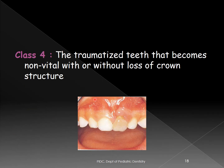Class IV is a traumatized tooth that becomes non-vital with or without loss of crown structure. Blunt injuries can cause pulpal degeneration and internal calcification, appearing as yellowish discoloration. This must be differentiated from grayish-brown discoloration, which indicates pulp necrosis — the treatment for each is different. Class IV refers to the yellowish internally calcified tooth.